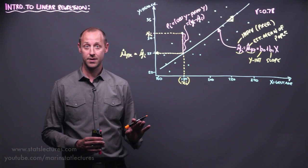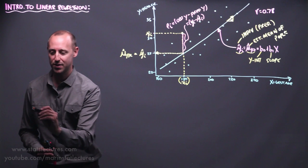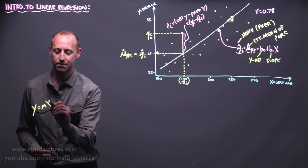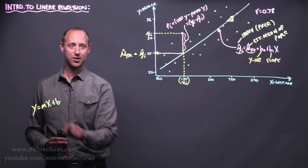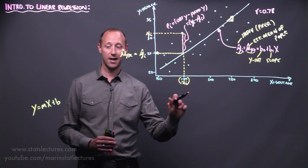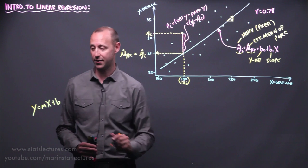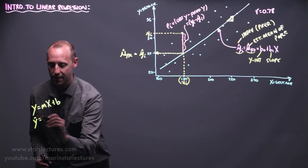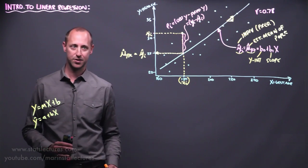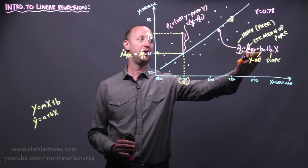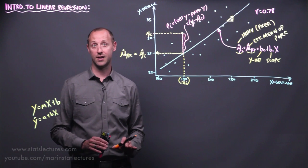If you recall from earlier math training, sometimes the equation for a line gets written as y equals mx plus b, where b is the intercept and m is the slope. Looking at different sources and textbooks, sometimes this gets written as a plus b times x, where a is the intercept and b is the slope. The notation I'm going to stick to is b0 for the intercept and b1 for the slope, but just note that slightly different notation is used in different sources.